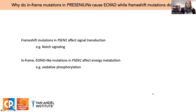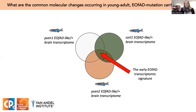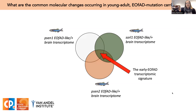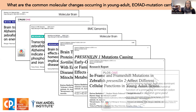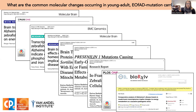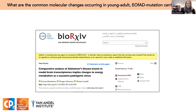In summary: why do in-frame mutations in presenilin-1 cause EOFAD while frameshift mutations do not? My results suggest it's because of their differential effects on signal transduction and energy metabolism. That was a snapshot of my presenilin-1 work. I've also performed similar analyses to characterize gene expression changes due to mutations in presenilin-2 and APP/APLP2, in a series of published papers. The final manuscript summarizing all these papers can be found on bioRxiv for anyone interested.